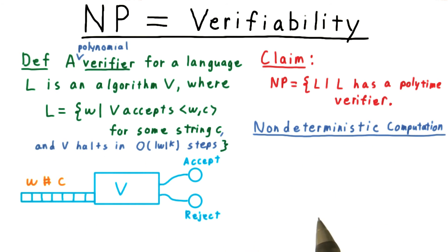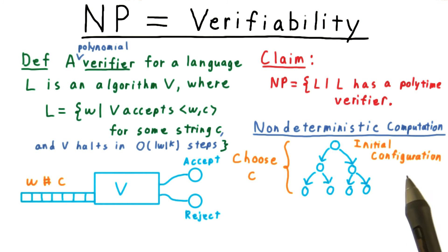Now we'll argue in the other direction. Suppose that V verifies a language. Then we can build a non-deterministic machine whose computation tree will look a bit like a jellyfish. At its very top, we'll have a high degree of branching as the machine non-deterministically appends a certificate C to its input.